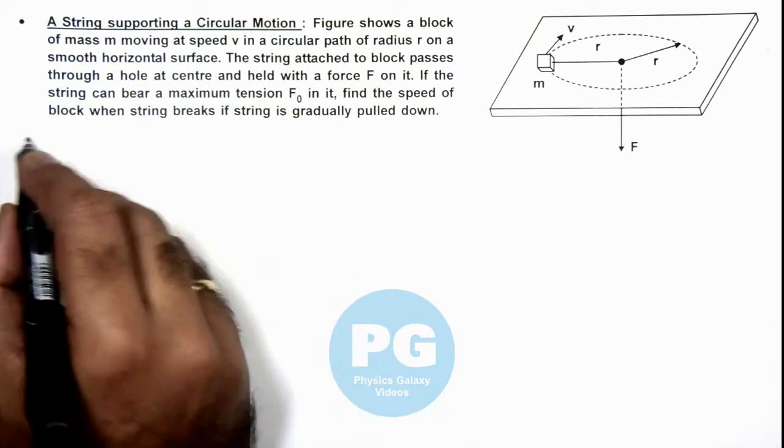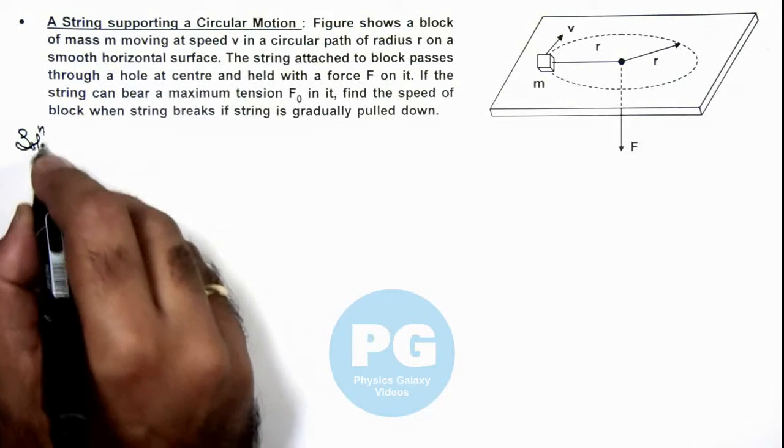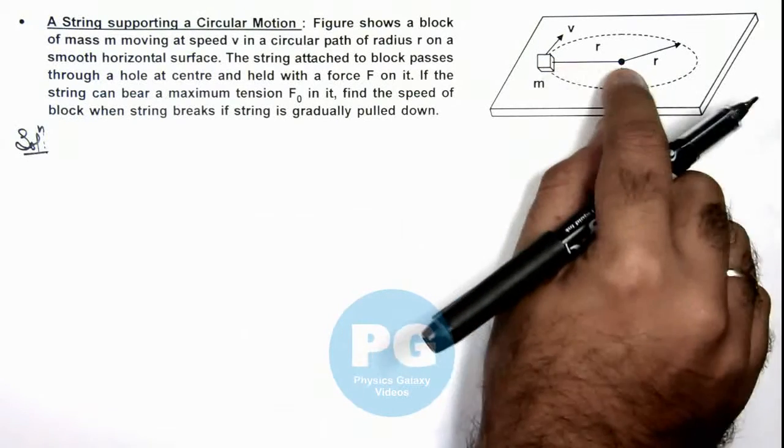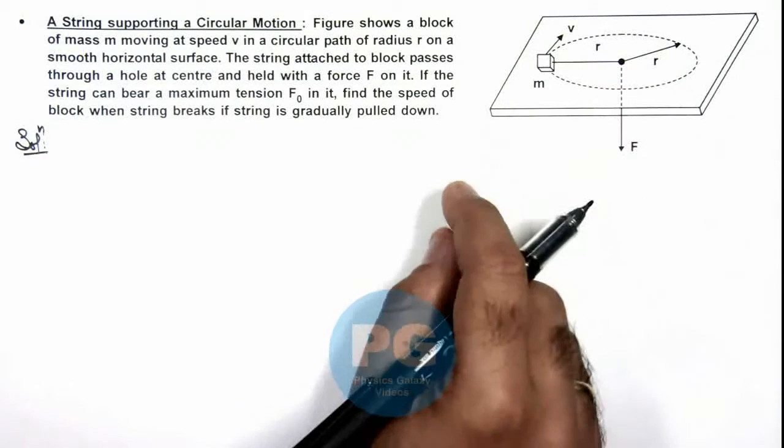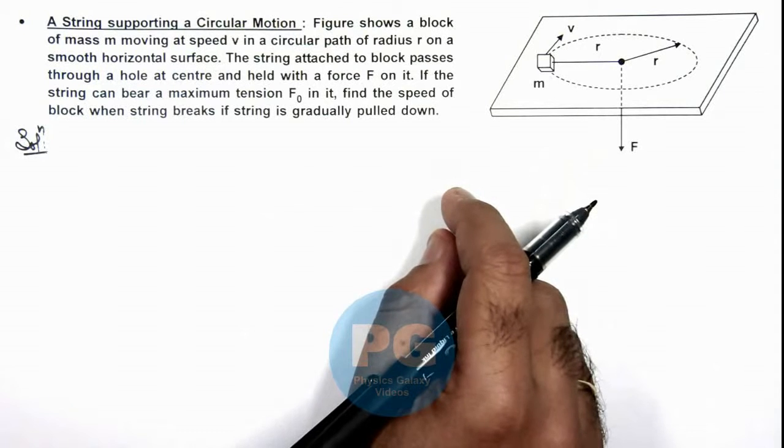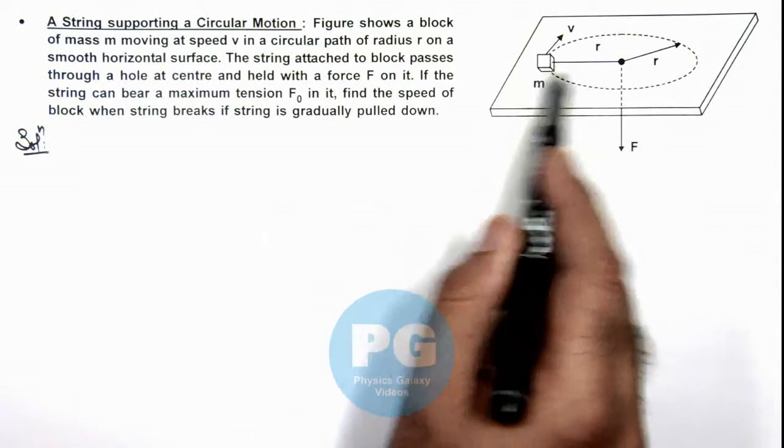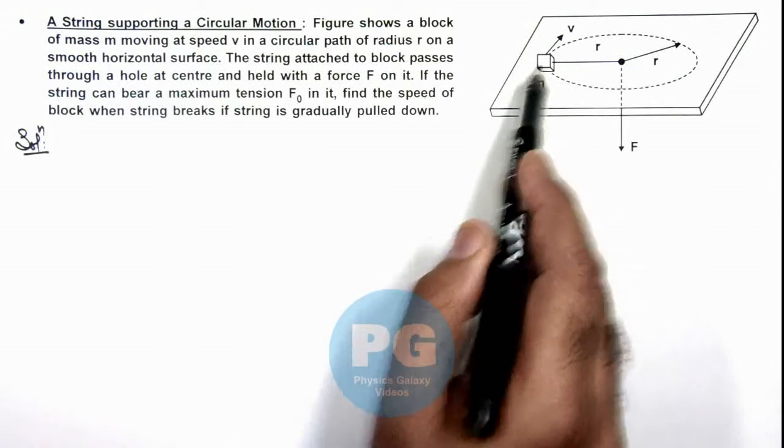Here we can see if the string is gradually pulled down, the radius decreases and the speed increases due to conservation of angular momentum. At one point of time string will break when its tension is equal to F_not.